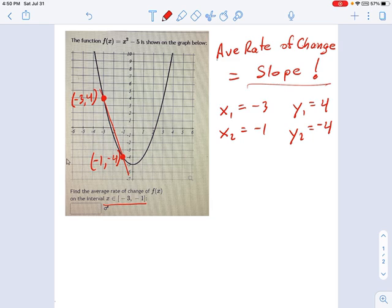So using that information, now we're going to figure out slope or average rate of change using this formula. Rise, which is the change in y, over run, which is the change in x. Now the change in y is just y2 minus y1. And the change in x is x2 minus x1.